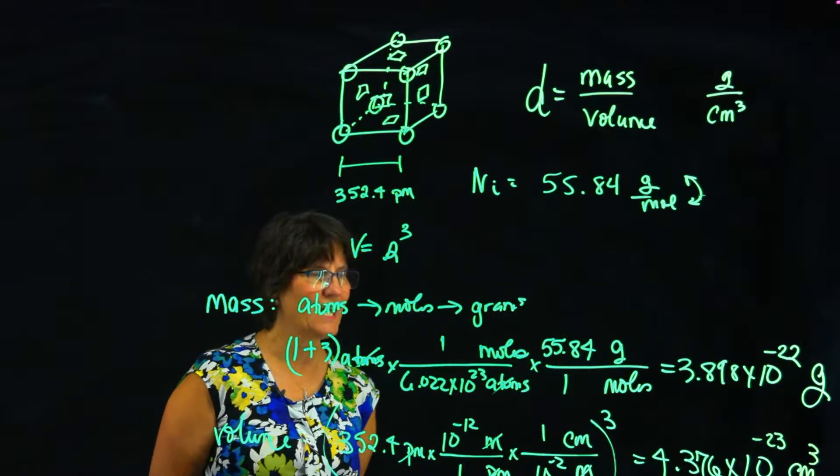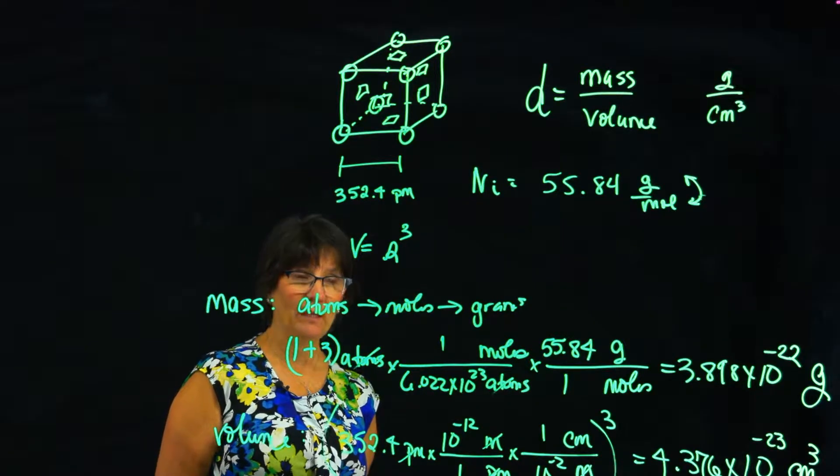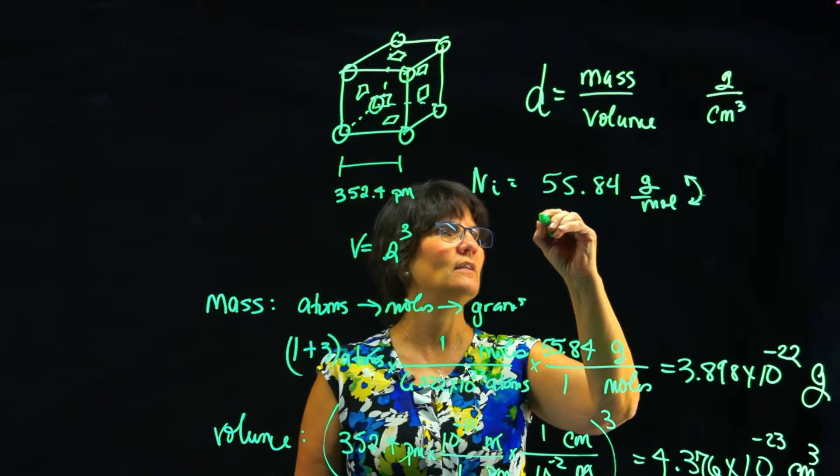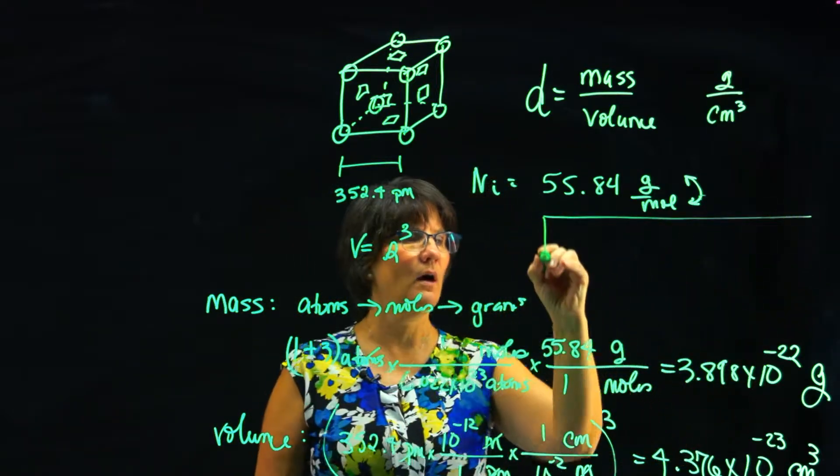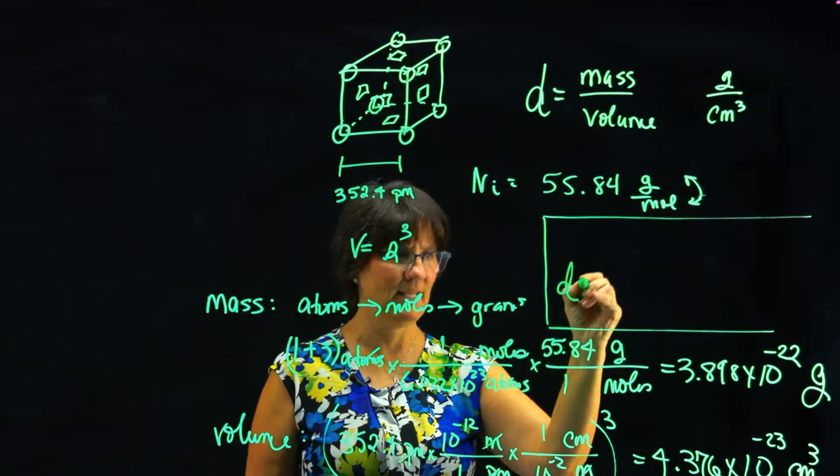So now I've got my picometers going to meters. And if I take this number and I cube it, I will have centimeters cubed. So what is the value? It is 4.376 times 10 to the minus 23 cubic centimeters. So we've got a tiny volume and we have a tiny mass. Does that mean we're going to have a tiny density?